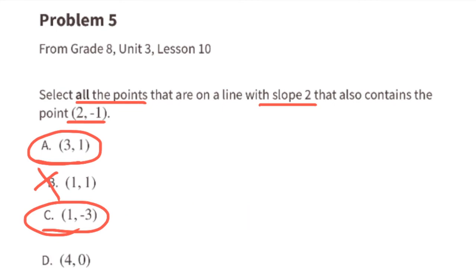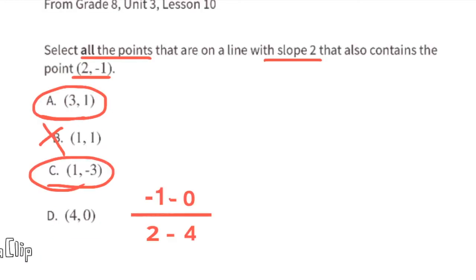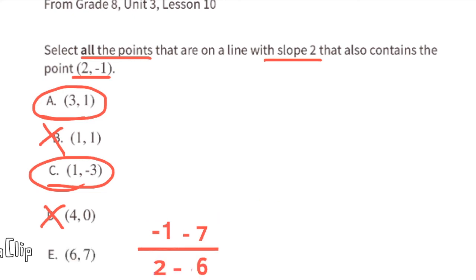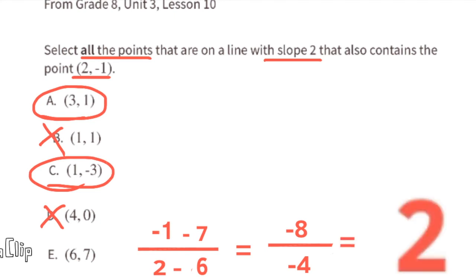Part D. Point (4, 0). Negative 1 minus 0 over 2 minus 4 equals negative 1 over negative 2, which is equivalent to 1/2. That is not a slope of 2. Part E. Point (6, 7). Negative 1 minus 7 over 2 minus 6 equals negative 8 over negative 4. A negative divided by a negative is a positive, and 8 divided by 4 is 2. This has a slope of 2, so both points are on the same line with slope 2.